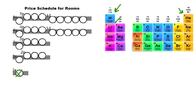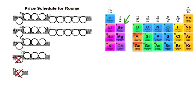For lithium, which has three electrons: the first two fill the first floor suite, and the third goes into the second floor suite — the next cheapest room. For beryllium with four electrons: the third electron goes into the second floor suite and the fourth electron also goes into the second floor suite.